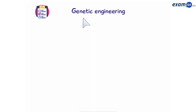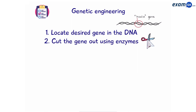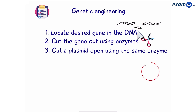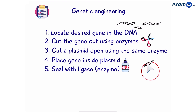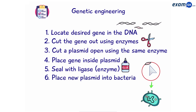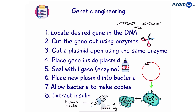A quick summary of what we've done: Step one, locate the desired gene in the DNA. Step two, cut the gene out of the DNA using restriction enzymes. Step three, cut a plasmid open using the same enzyme. Step four, place the gene inside the plasmid. Then seal the gene with ligase enzyme — now we've produced recombinant DNA. Place the new plasmid into a bacteria and allow the bacteria to make many copies of itself. Finally, extract the insulin. We've produced human insulin, but made by a bacteria.